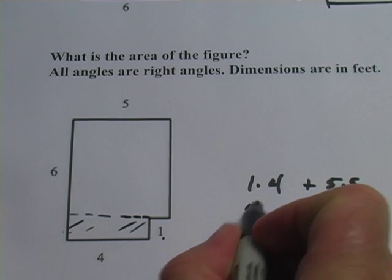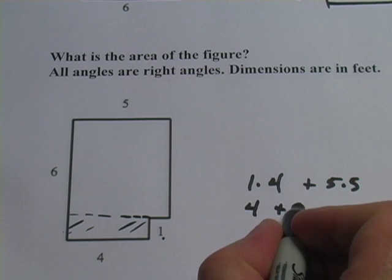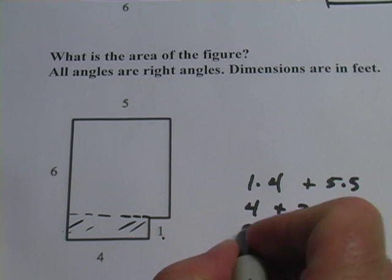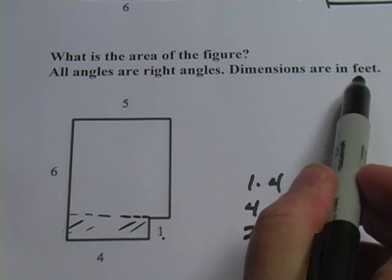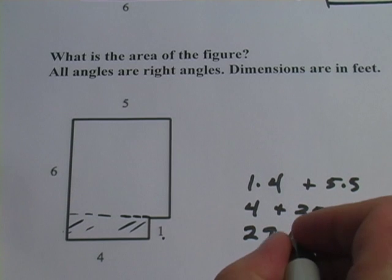So one times four is four plus five times five is twenty-five. So the area there is twenty-nine and the dimensions are in feet again, so square feet.